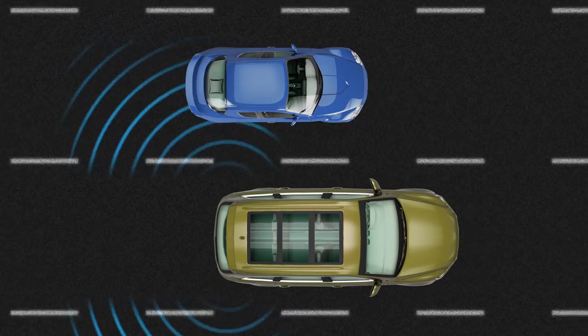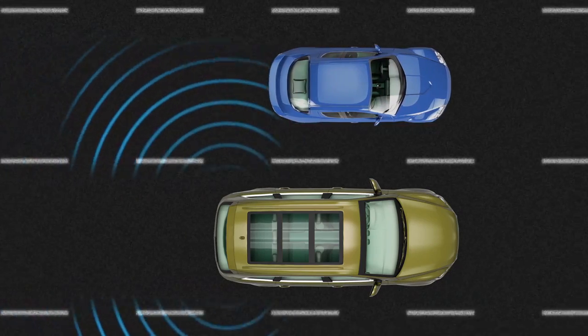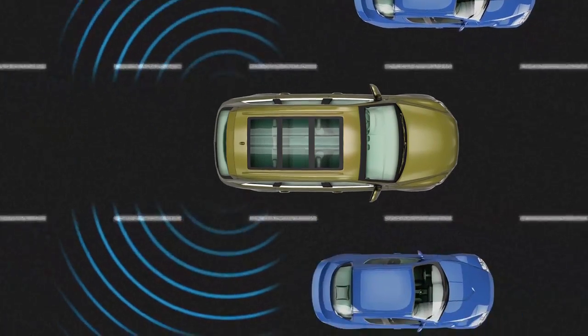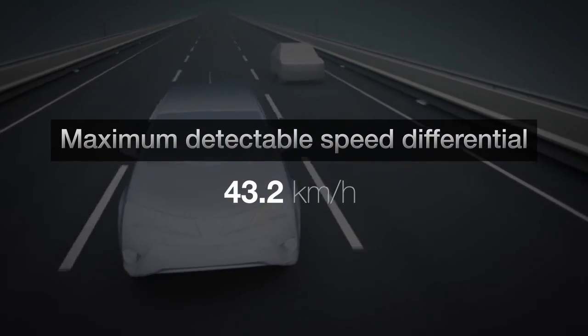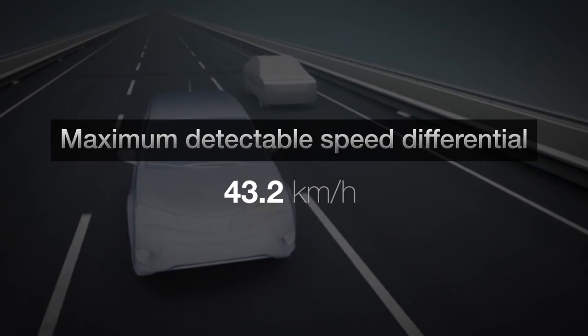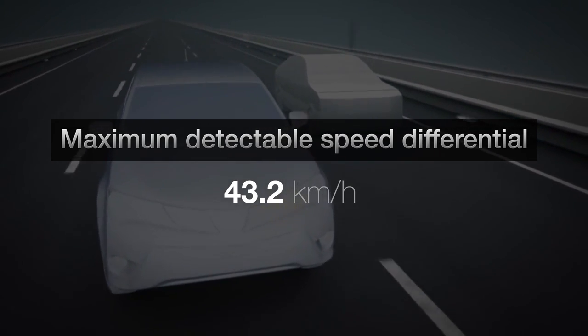The system is designed to detect vehicles larger than a 125cc motorbike moving at a speed greater than 16 km per hour. The maximum detectable speed differential between the two vehicles is 43.2 km per hour.